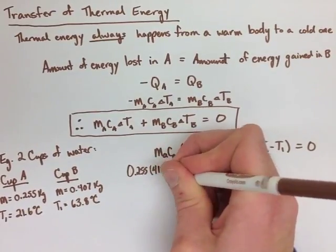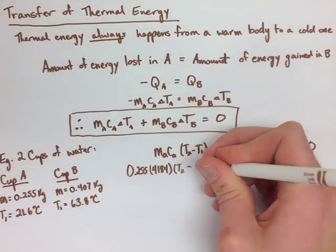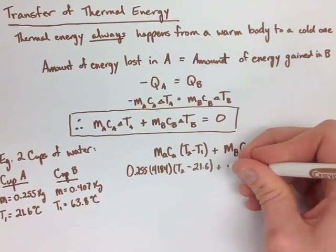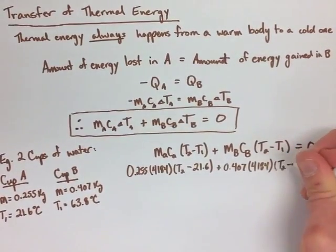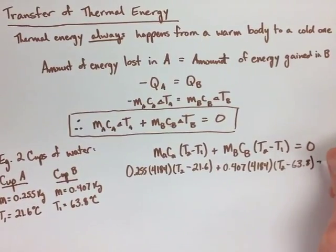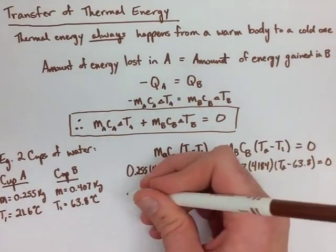The reason is, when we sub in all of our numbers, we actually want to solve for T2, and we know that it's going to be the same value for both of the cups because they're actually being poured together, and we can't have two different temperatures put together as one.